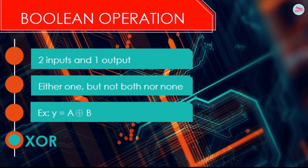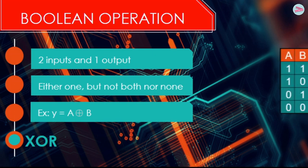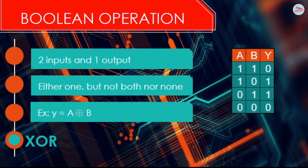This is the truth table for XOR operation where if one of the input is one then the output Y will be one. But if both of the input is one and both of the input are zero then the output will be zero.